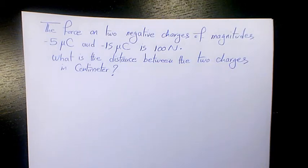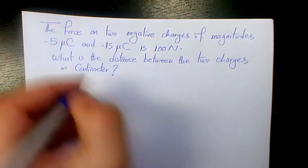Now in this example, we want to find the force on two negative charges of magnitudes -5 μC and -15 μC is 100 N. What is the distance between the two charges in centimeters? We have two charges, both of them are negative. I need to use Coulomb's law and Coulomb's formula.